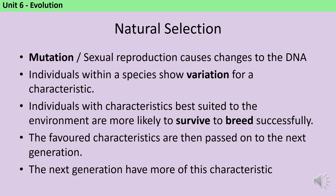Natural selection has several key processes that must occur for evolution to happen. Once you have the list memorised it makes exam questions easy — they almost always take the form: 'Explain how species X evolved trait Y by natural selection,' and you give the list in the same order every time. For natural selection to even start, there needs to be variation in the population. In a population of clones — like a colony of bacteria or a field of a domesticated crop grown from the same seed — natural selection can't act because there's no variation.